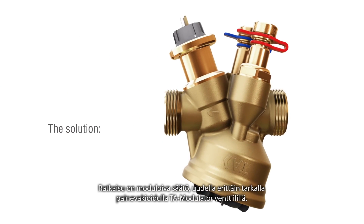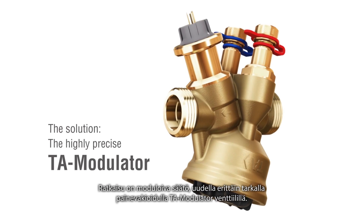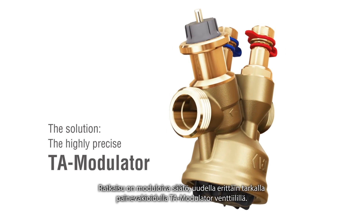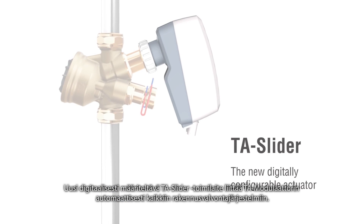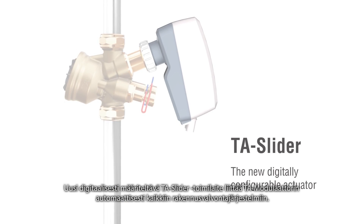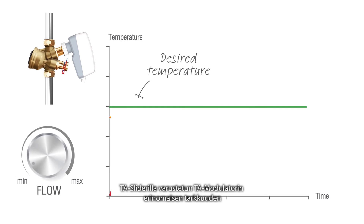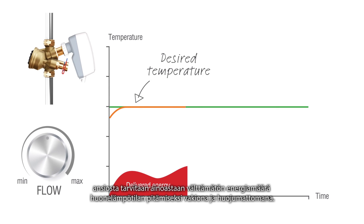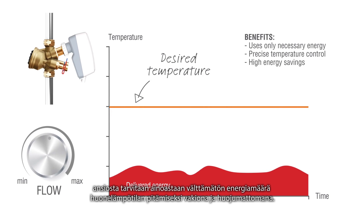The solution is modulating control with the new highly precise pressure-independent control valve TA modulator. The new digitally configurable actuator TA slider connects TA modulator to all building automation systems. Due to the superior accuracy of TA modulator with TA slider, only the necessary amount of energy is delivered to keep the temperature constant without any oscillations.